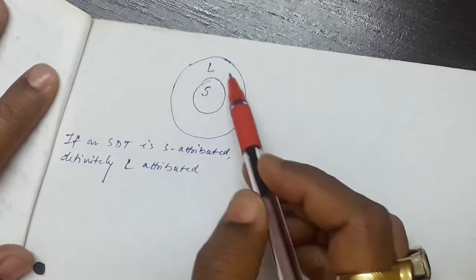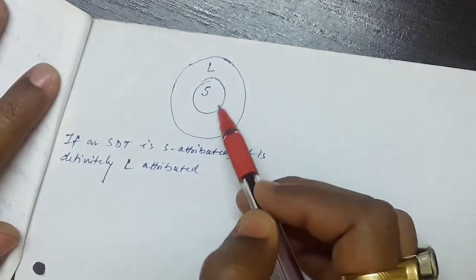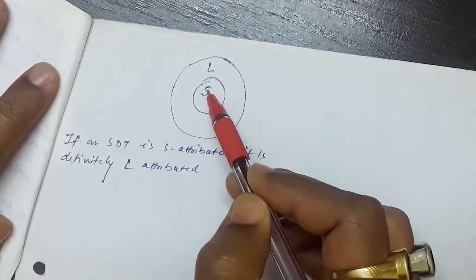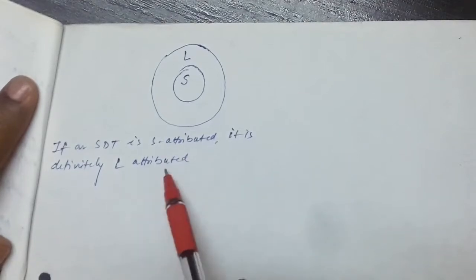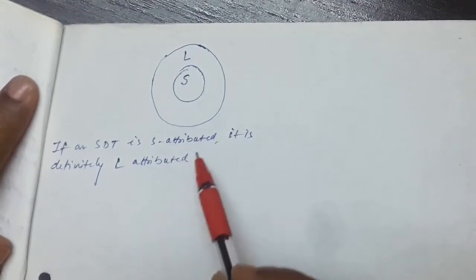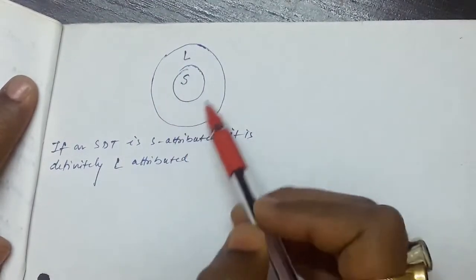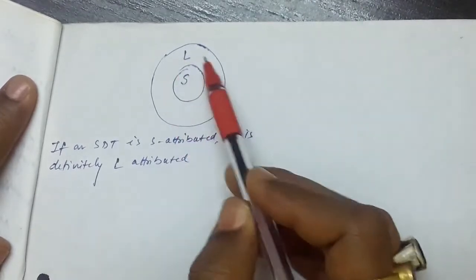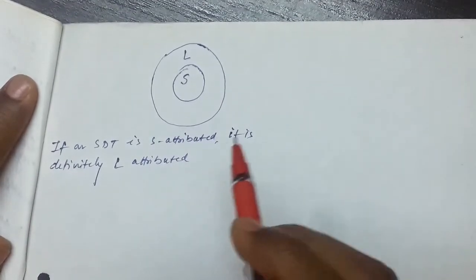Looking at this diagram, L-attributed is a bigger class and S-attributed SDT is actually a subset of it. So if an SDT is S-attributed, it is definitely L-attributed as well. The L-attributed is the larger class, and the synthesized attribute is the smaller class that is a subset of this entire class.